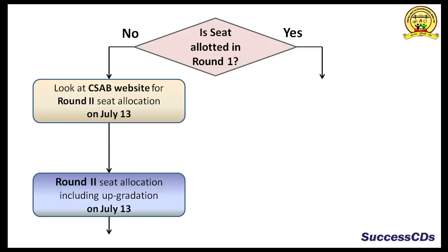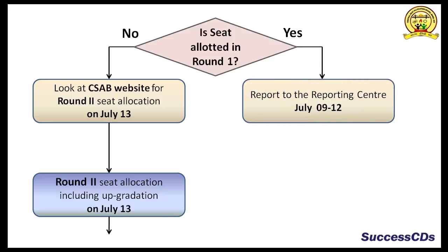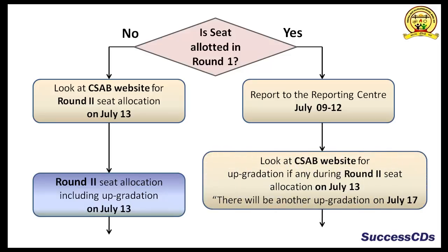And if yes, report your seat allotment status to the reporting center between July 9th and July 12th. After that, look at the CSAB website for upgradation if any during Round 2 seat allocation on July 13th. Please note, there will be another upgradation on July 17th also.